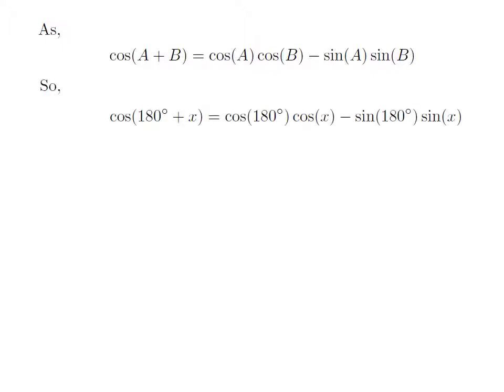Let us apply the above identity for cosine of 180 degrees plus x. Here, a is 180 degrees and b is x. So, cosine of 180 degrees plus x is equal to cosine of 180 degrees into cosine of x minus sine of 180 degrees into sine of x.